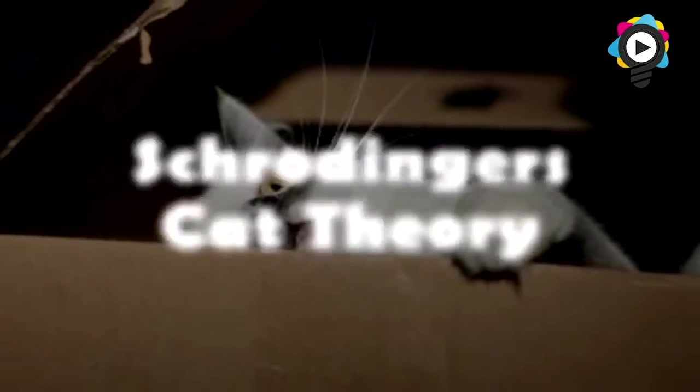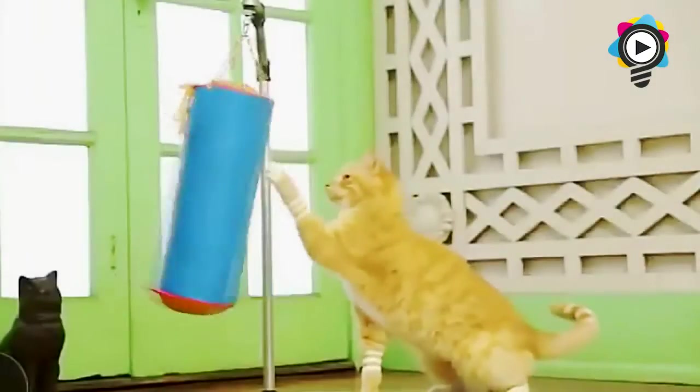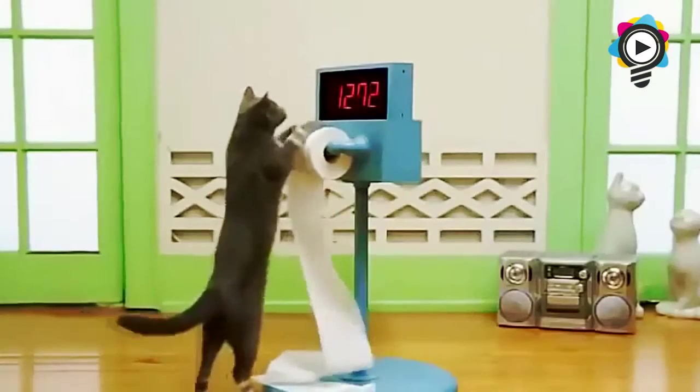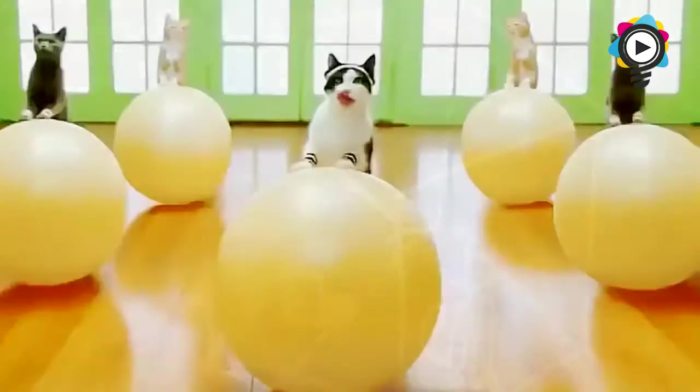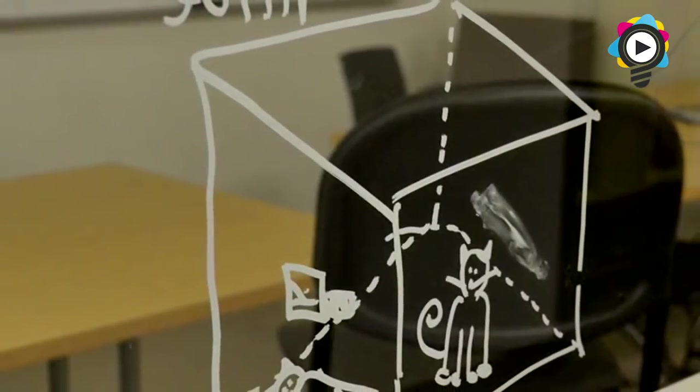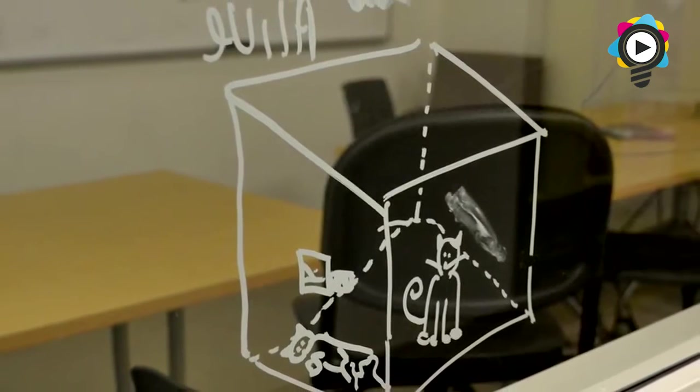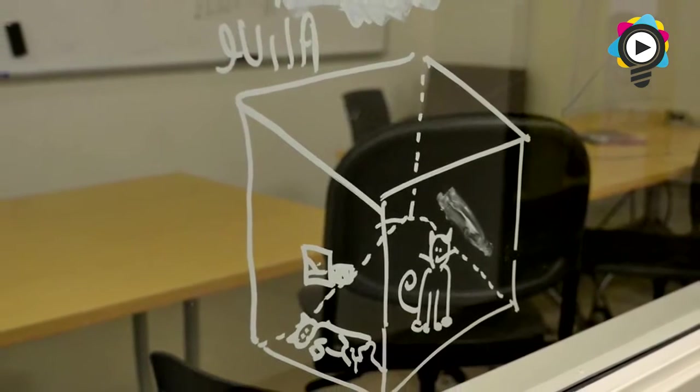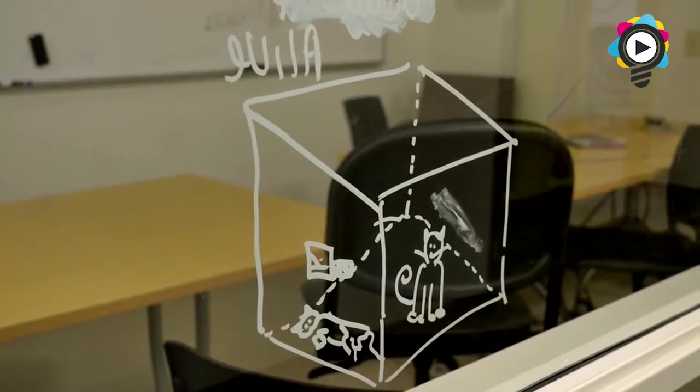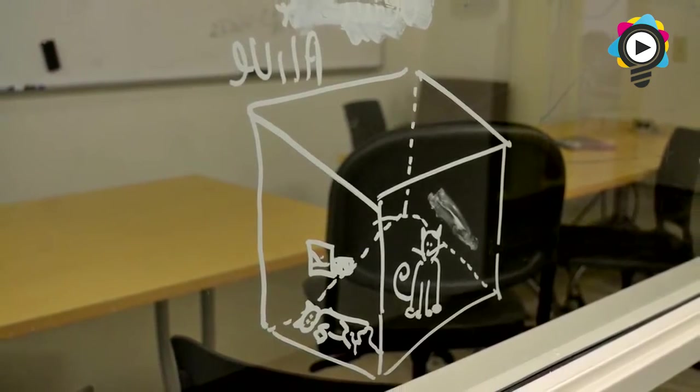Number 3: Schrodinger's Cat Theory. The internet loves a good cat, doesn't it? So why not mention a cat here? Schrodinger's Cat is a famous thought experiment illustrating the seemingly paradoxical nature of quantum theory and how observation makes such a difference, almost forcing the universe to choose a particular path.